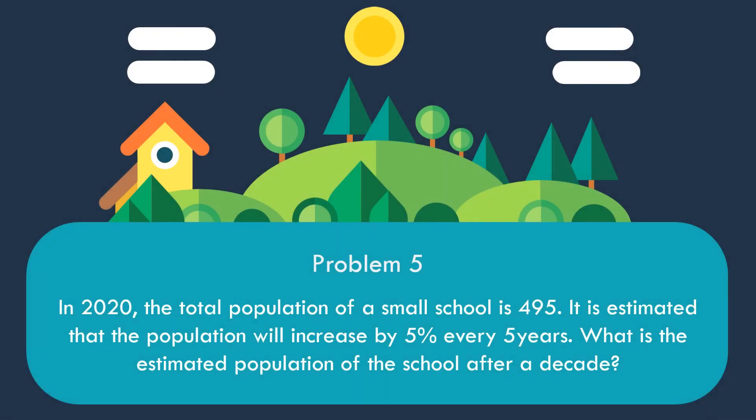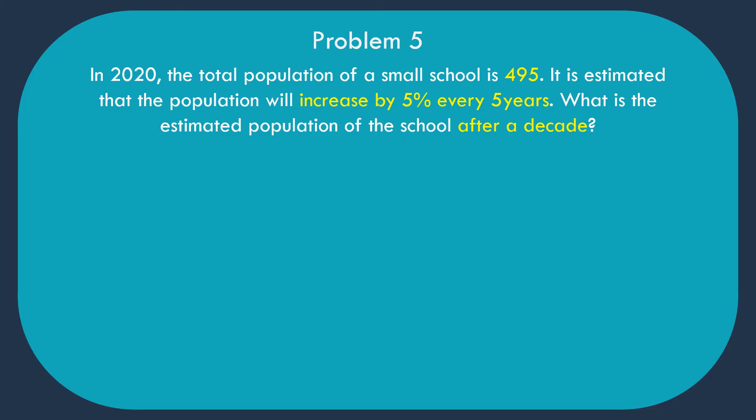Problem number 5. In 2020, the total population of a small school is 495. It is estimated that the population will increase by 5% every 5 years. What is the estimated population of the school after a decade?